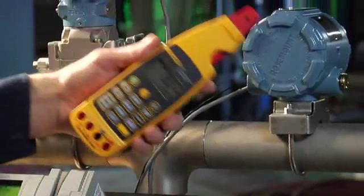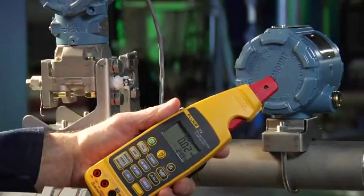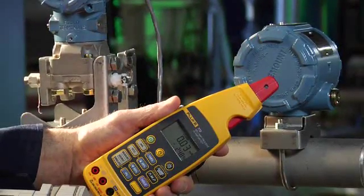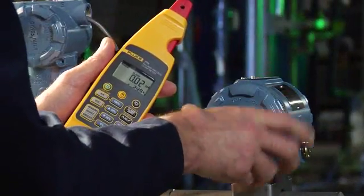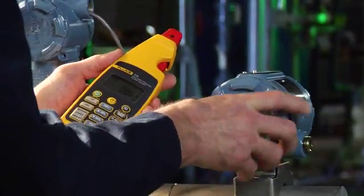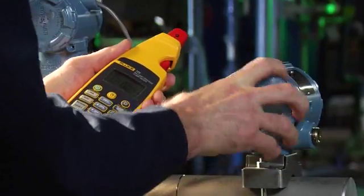Once the bad signal is found, you can then use the milliamp loop troubleshooting capabilities of the 773 to isolate the fault. To troubleshoot the loop, you need to access the signal wires. Remove the cover on the transmitter and find the signal wires.